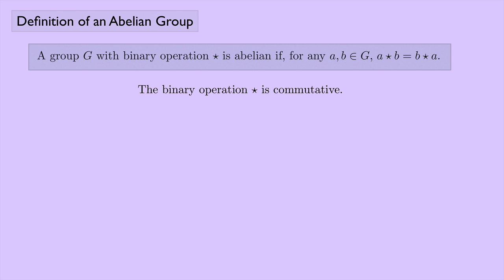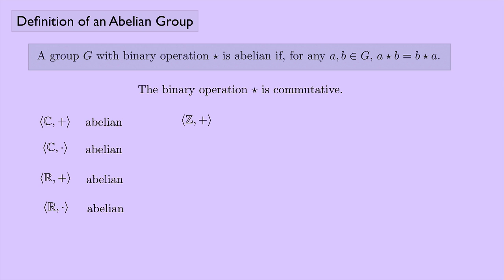Let's look at some of the groups we've already discussed. The set of complex numbers under addition — that's abelian. The set of complex numbers under multiplication — also abelian. The set of real numbers under addition — abelian. The set of real numbers under multiplication — abelian. The set of integers under addition — abelian. And the set of rational numbers under addition — also abelian.